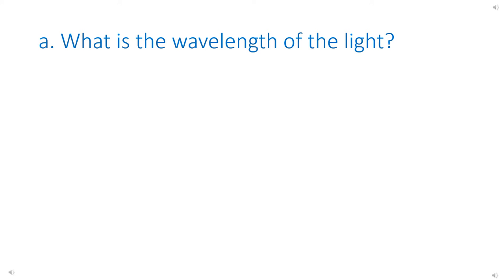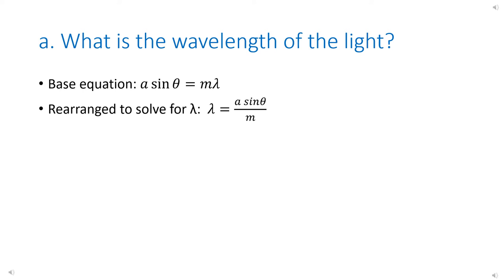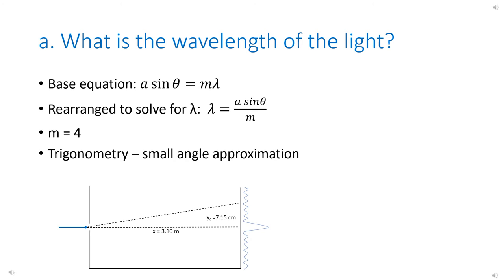Now that we have determined all of our givens, we need to decide which equation to use to solve part A, which is to find the wavelength of the light. The base equation we will start with is a times sine of theta equals m times wavelength. Rearranging to solve for wavelength, we get wavelength equals a times sine of theta divided by m. Because we were given the distance between the fourth order minima, we will use m equals 4. Since we do not currently know theta, we need to use trigonometry. For single-slit diffraction calculations, we are able to use small angle approximation, so we use tangent in place of sine. Tangent is opposite over adjacent, which in this case is y and x respectively, as shown in the diagram.